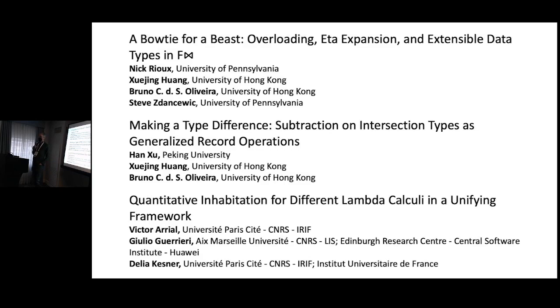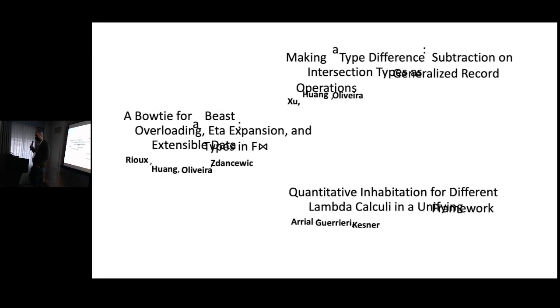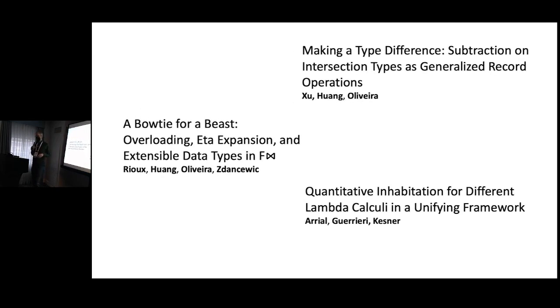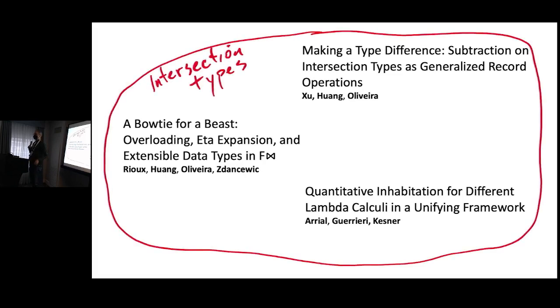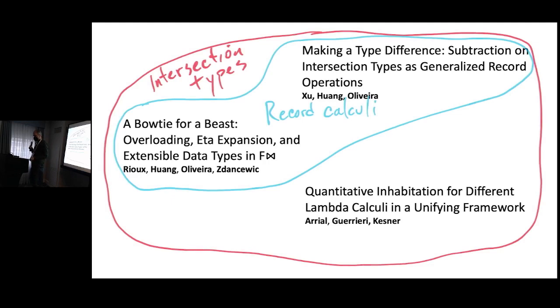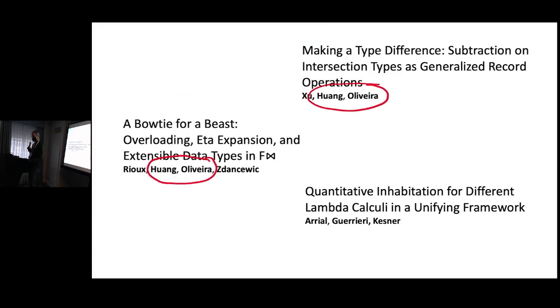So this session has these three papers. Let me reorganize it and show you how they fit together. This is a very interesting group of papers because they all share a common basis in intersection types in one way or another. Two of them actually share a common basis not only in intersection types, but also in an interest in record calculi and operations on records, and two of them also have an intersection in the author list. So it's a very intersection-y session.